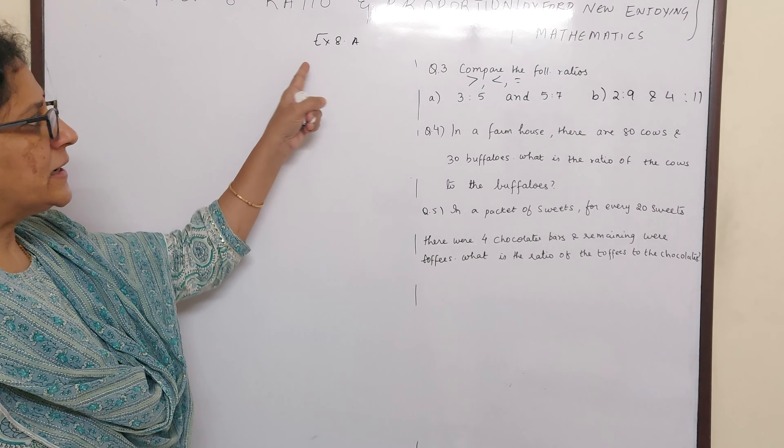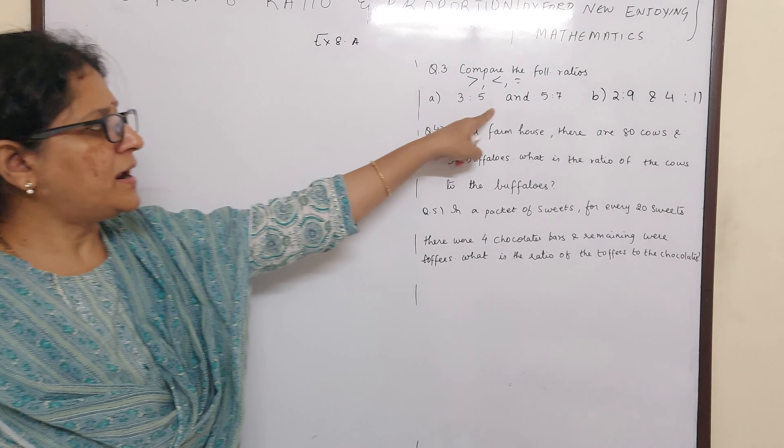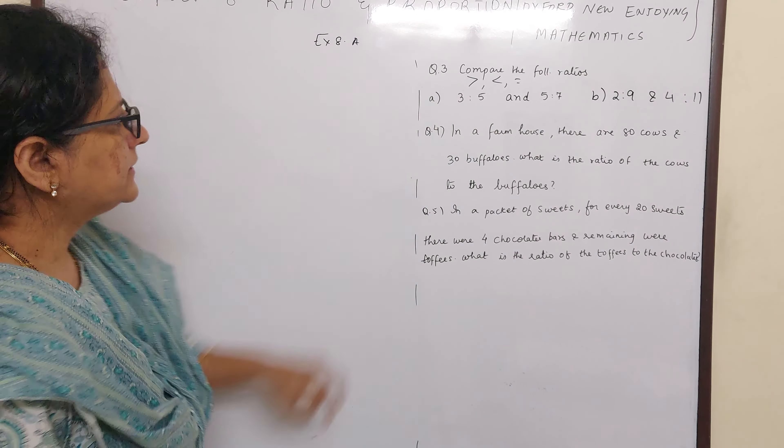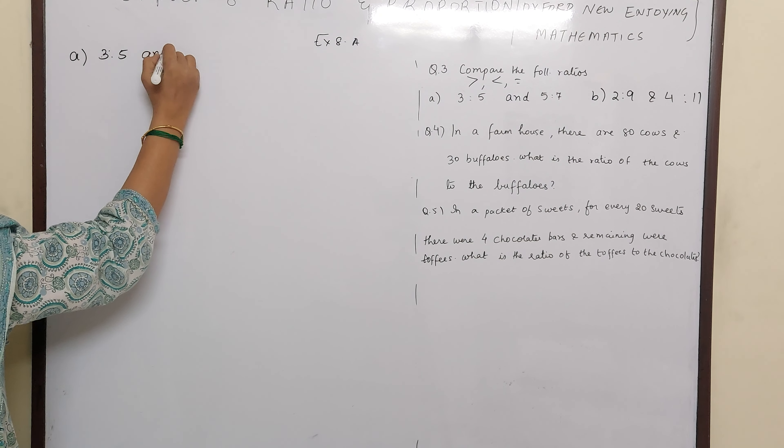Hi children, now moving on to exercise 8.10, question number 3. They have told you to compare these ratios, right? 3 is to 5 and 5 is to 7.